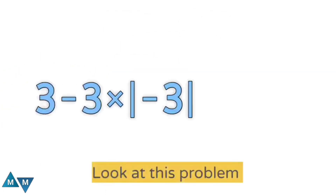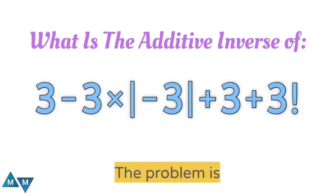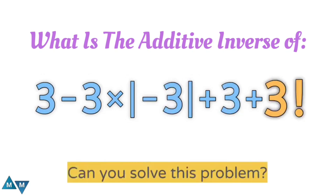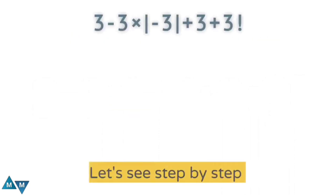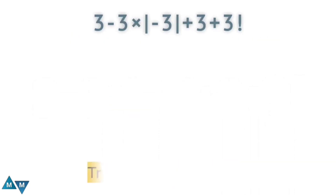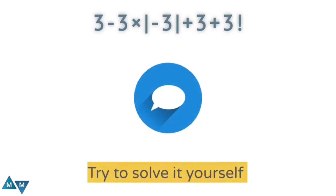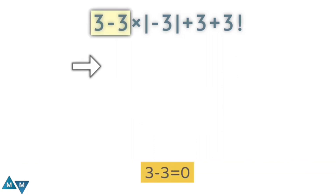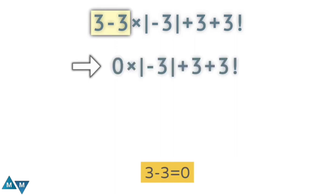Here is the last challenge: what is the additive inverse of three minus three times the modulus of minus three, plus three, plus three factorial? We've seen many people solve it the following wrong way: three minus three is zero, giving zero times the modulus of minus three, plus three, plus three factorial.